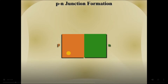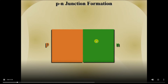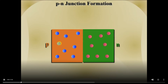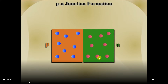In n-type semiconductor the majority carriers are electrons, whereas in p-type semiconductor the majority carriers are holes. When n-type and p-type semiconductors are joined together, electrons from the n region start diffusing into the p region and holes from the p region start diffusing to the n region. This way diffusion current is established across the junction.